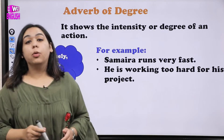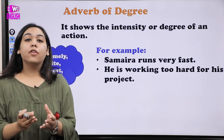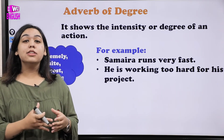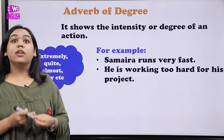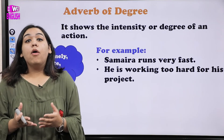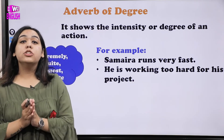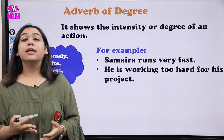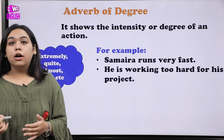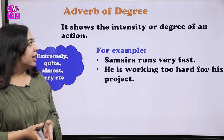The next type is adverb of degree. Degree tells us the intensity — what is the intensity of the action. For example: 'Samira runs very fast' — 'very' tells us about the degree, how fast she runs. 'He is working too hard for his project' — 'too' is the adverb of degree indicating intensity. Examples include: quite, almost, very.